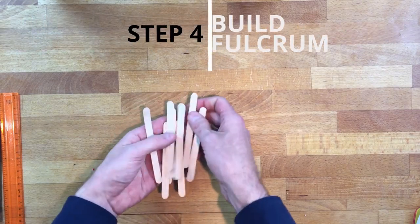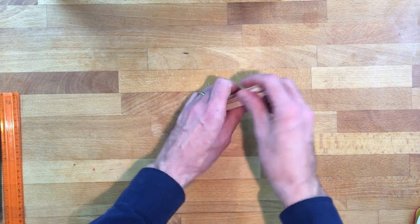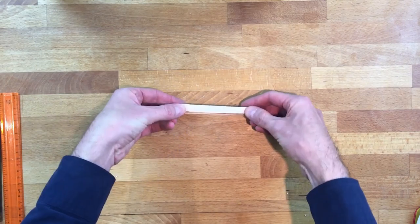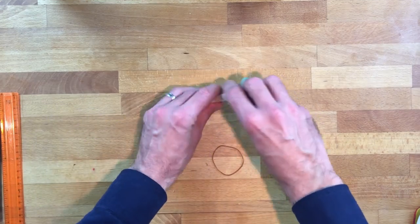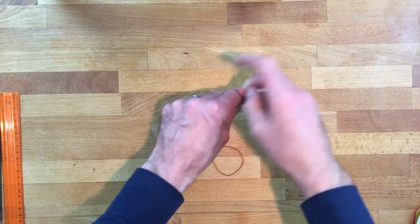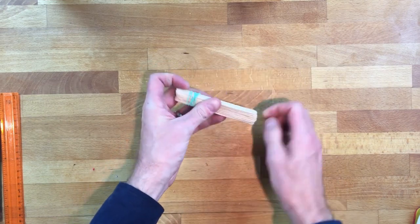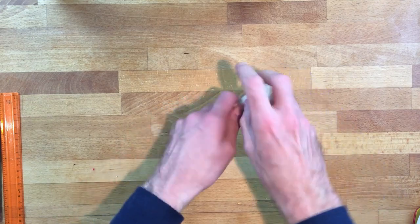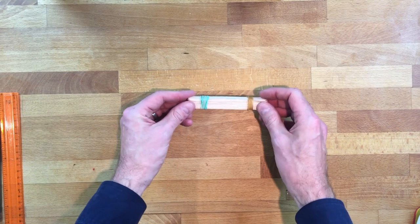The next step is, we're going to take our eight regular sized popsicle sticks, and we're going to stack them on top of each other, just like so. And we're going to wrap two regular sized elastic bands around them. Make sure that they are secure. And we're going to use this as our fulcrum. And it should look something like this.